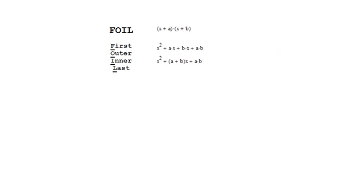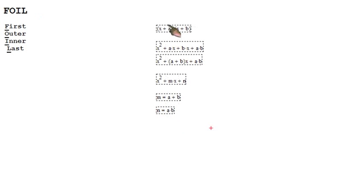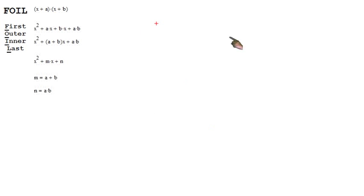So when you have a quadratic trinomial, it typically looks like this: x squared plus some number m times x plus n. So if you relate these two, you see that m is this a plus b term, and n is this a times b term. So with that, we can then work on a method for factoring any trinomial.